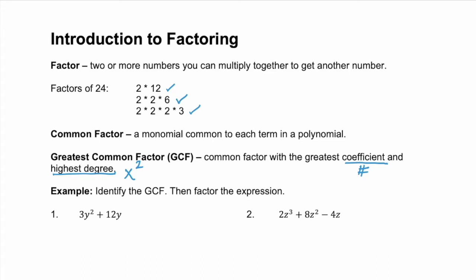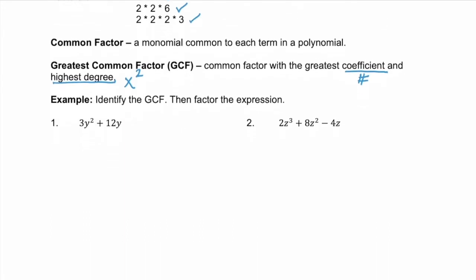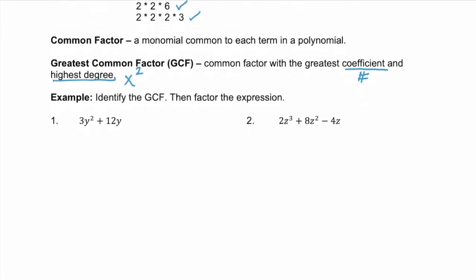Let's look at a couple of examples — identify the GCF, then factor the expression. For example 1, we have two terms. The first term is 3y squared and the second term is 12y. If we factor the first term, 3y squared is the same as 3 times y times y. And the second term, 12y, factors to 3 times 4 times y.